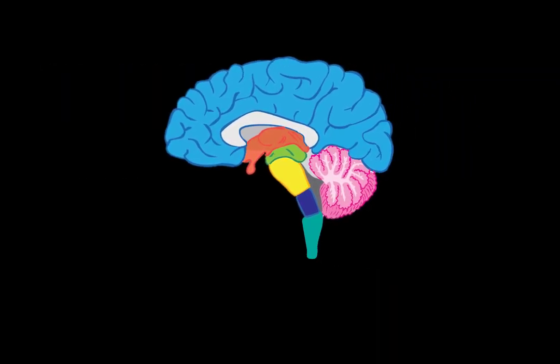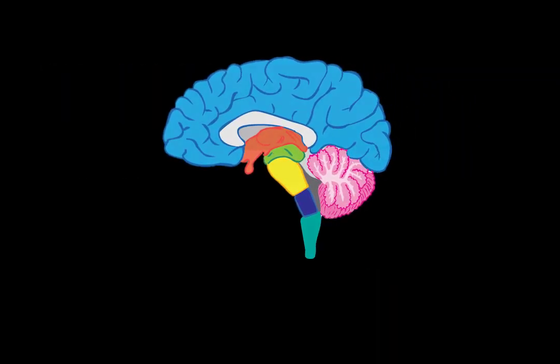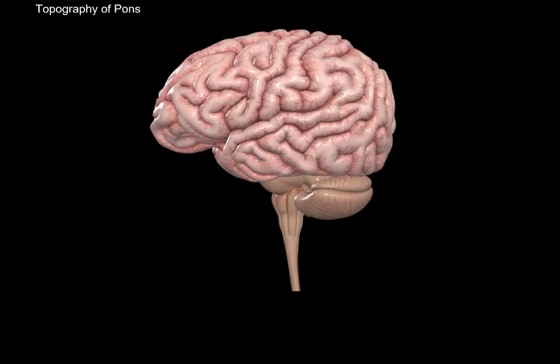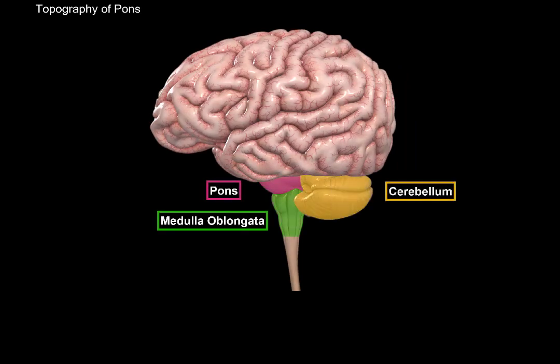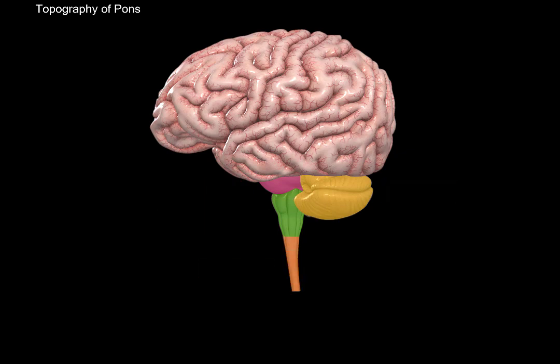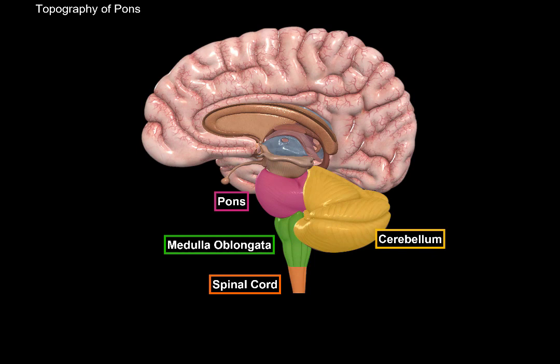Pons is located here, lying above the medulla and in front of the cerebellum, and down here you can see the spinal cord. If you remove a part of the cerebral cortex, you'll be able to see the rest of pons, as well as the mesencephalon, or the midbrain, which is the most superior part of the brain stem.